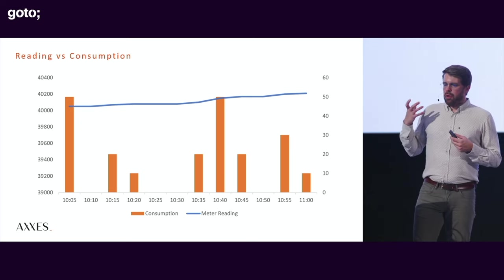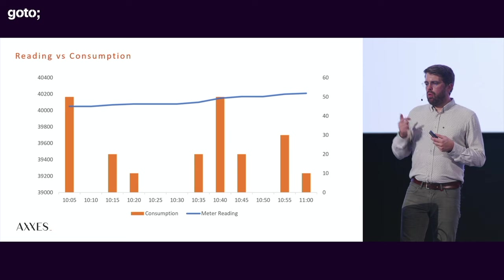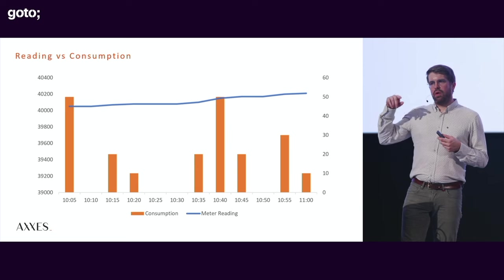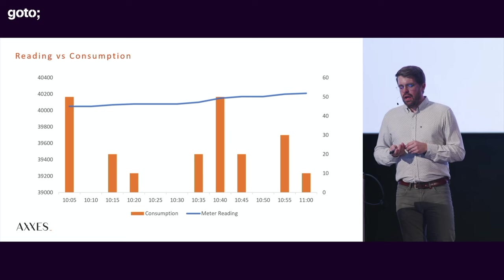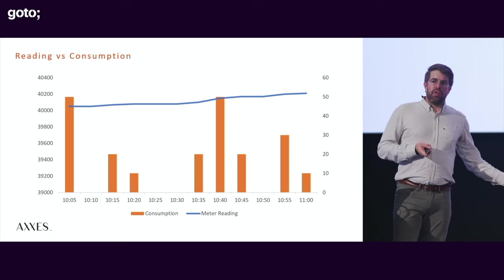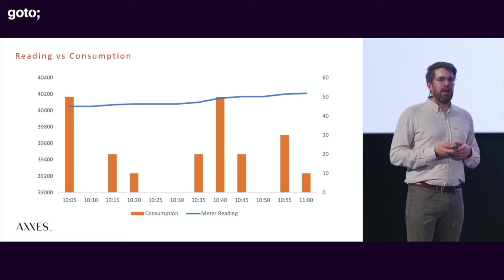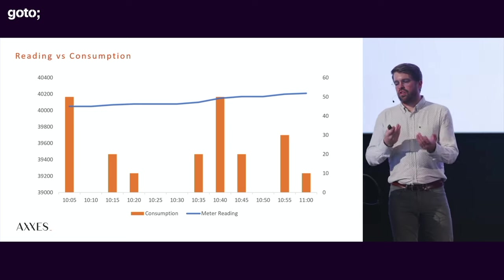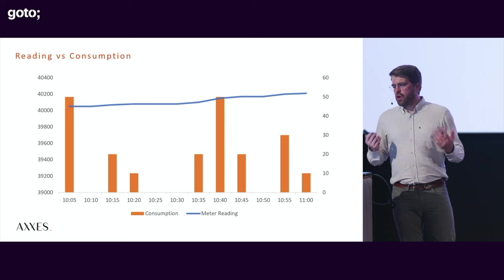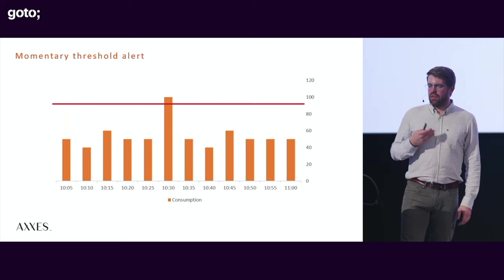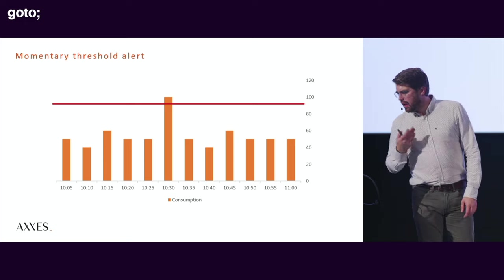Since the meters don't output consumption directly, that's one of the things we had to compute in our backend. Thresholds get tricky: a momentary threshold is clear-cut — you went over the red line at 10:30 and you raise an alert. But a 20-minute average threshold is more complex — you might not be over it for four consecutive blocks but still be over it on average. These are the business questions you're going to get.